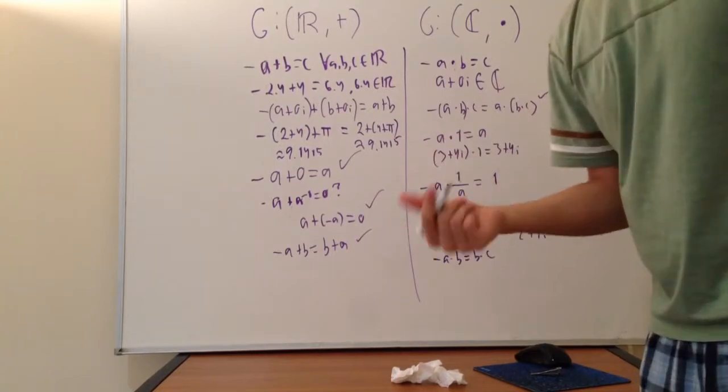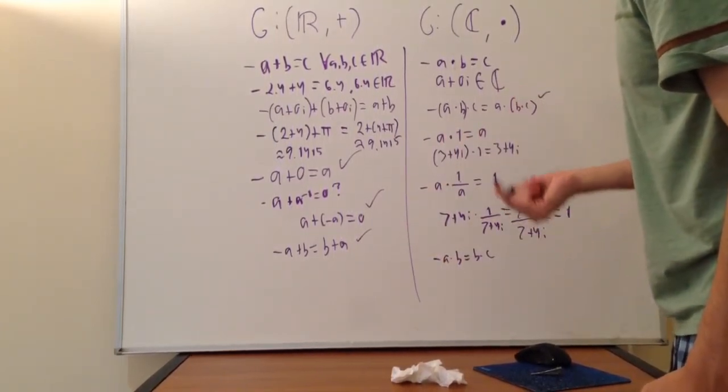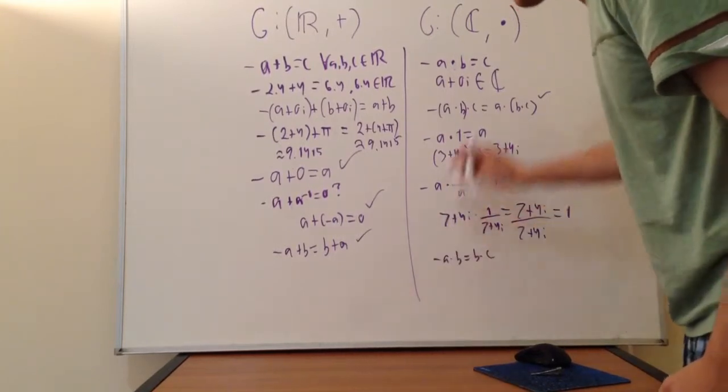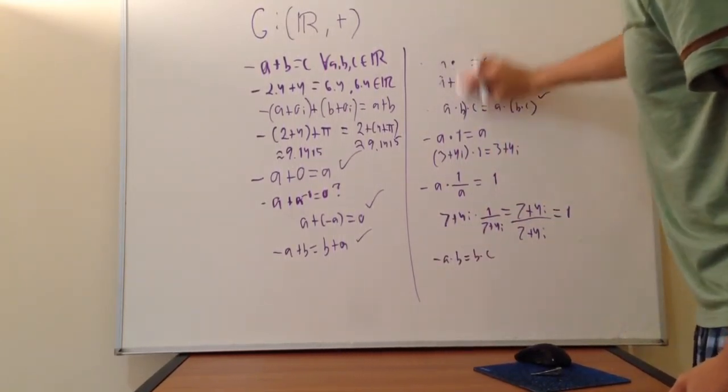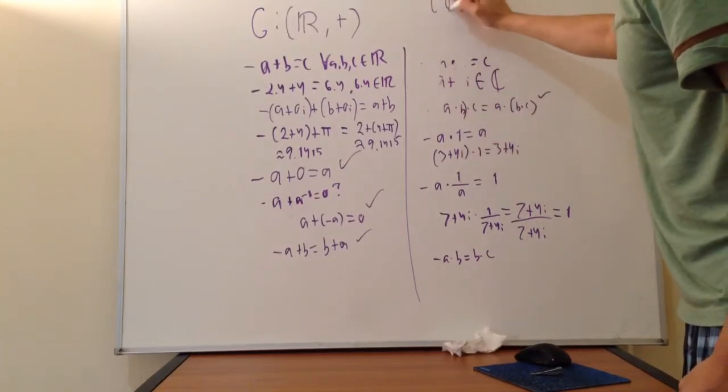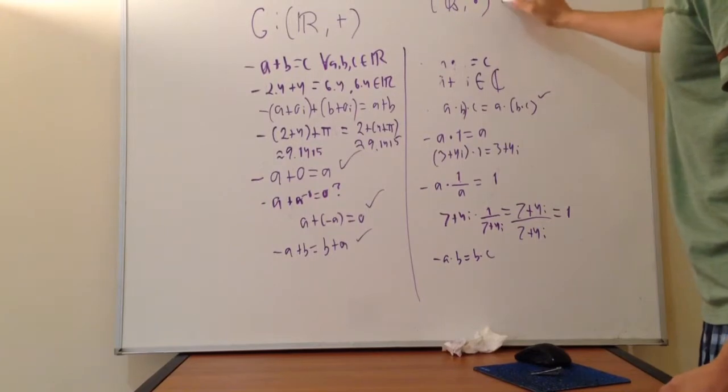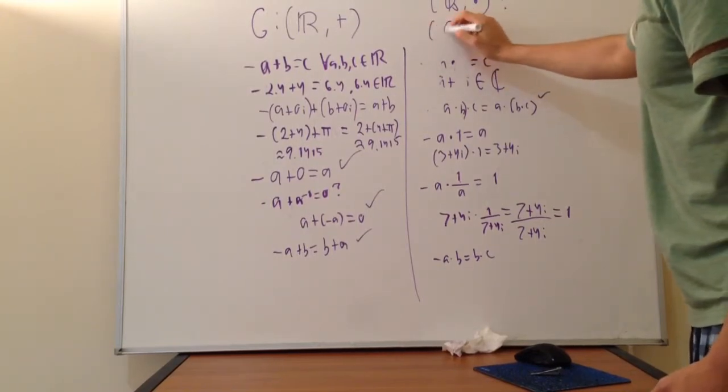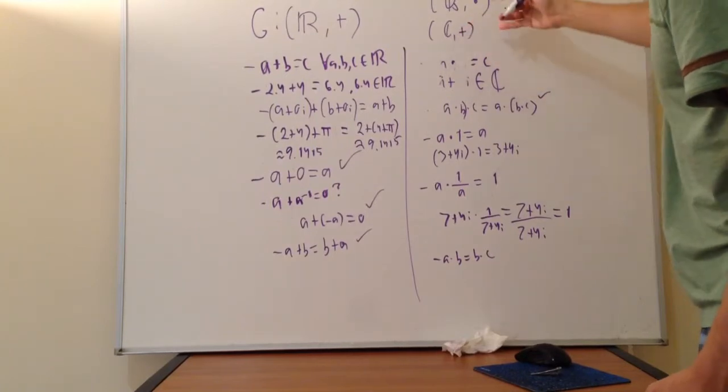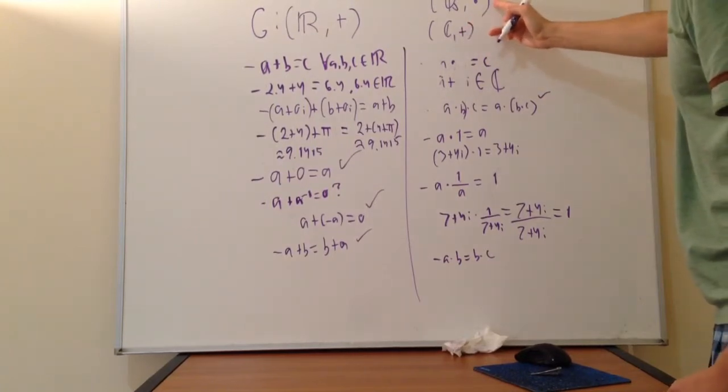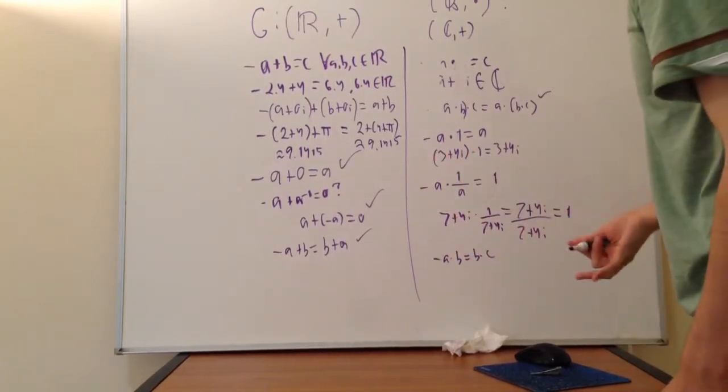There are tons of groups out there. As a good exercise or good practice, it would be good to show that the rationals under multiplication is a group, and complex under addition. Basically, if you can show that these two are groups, you know what's going on already.